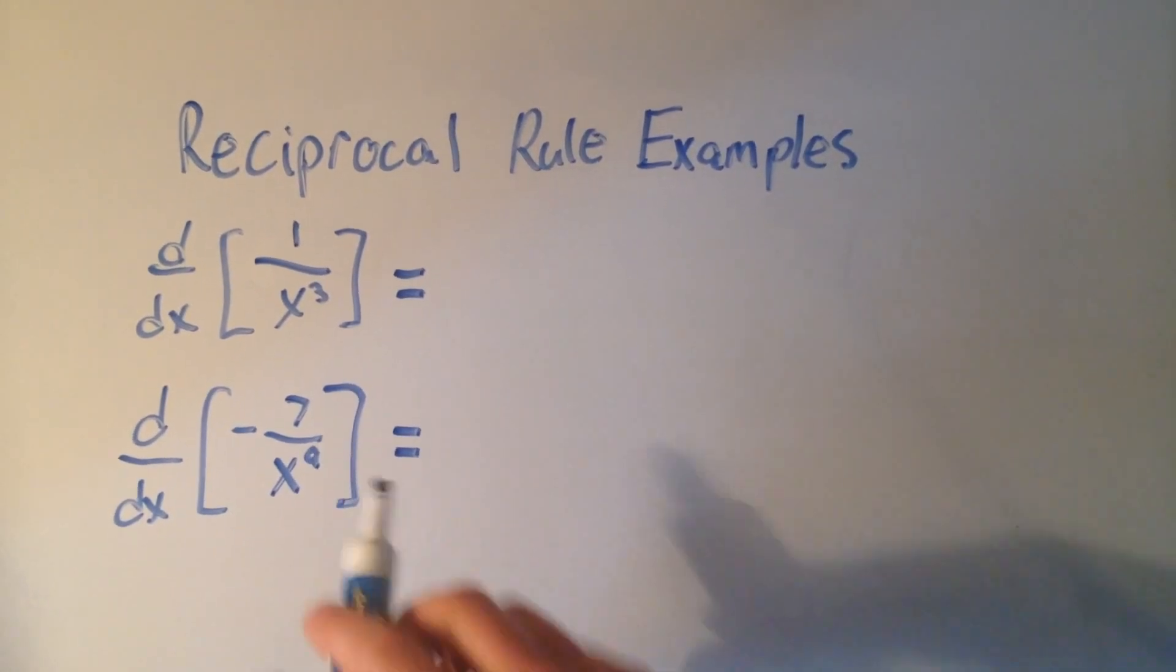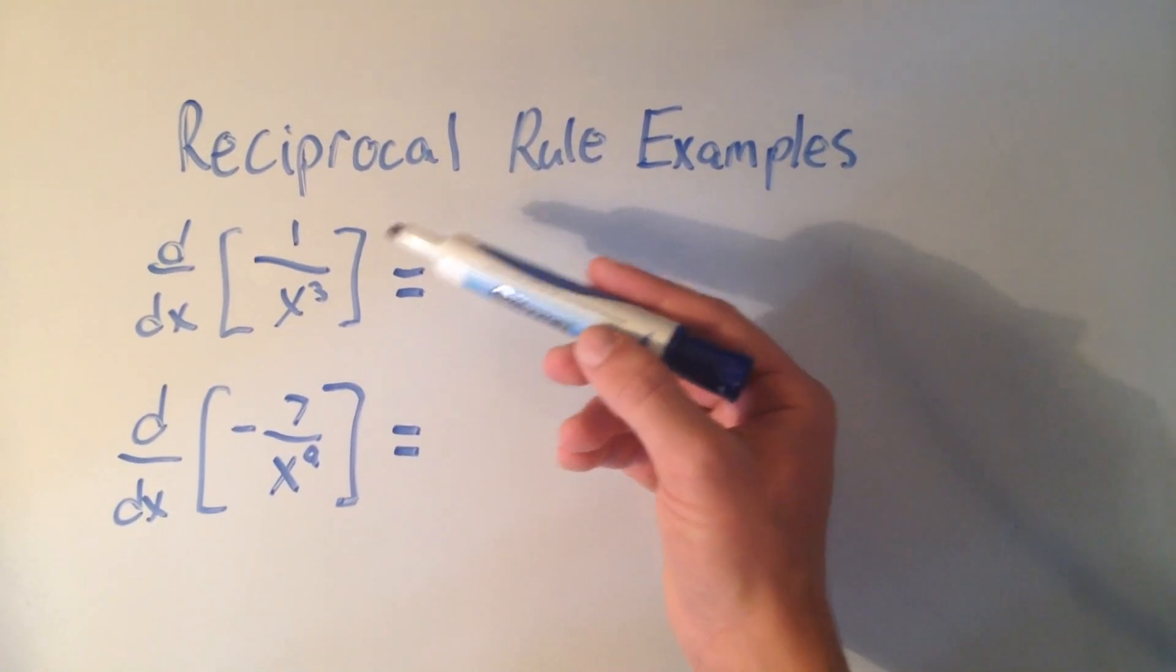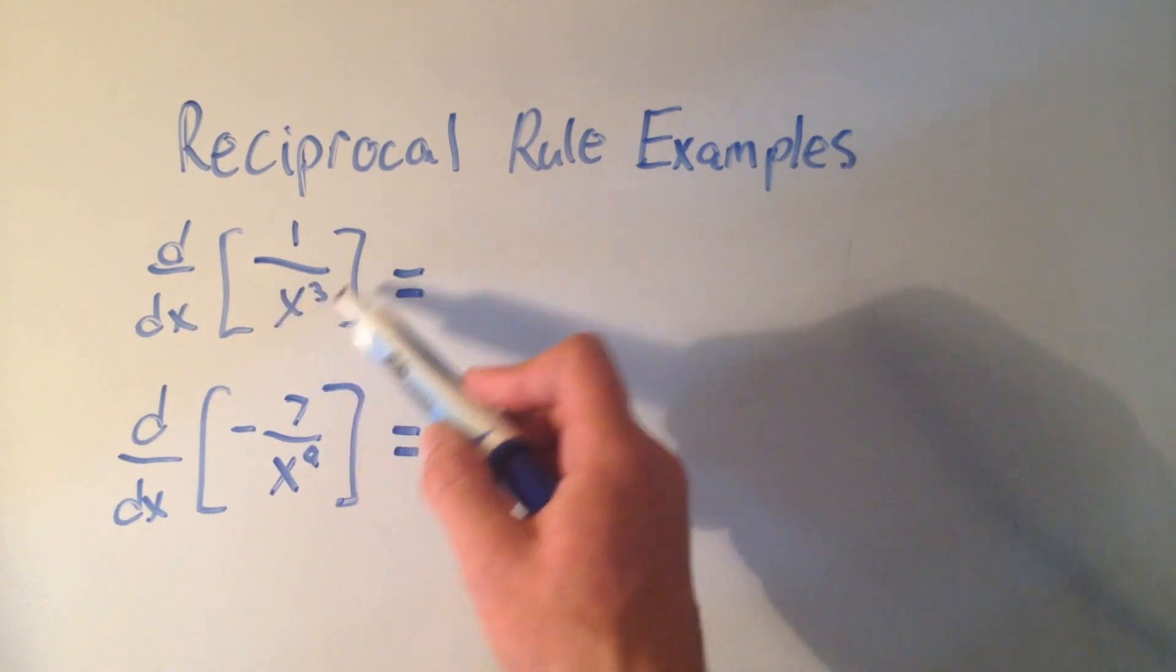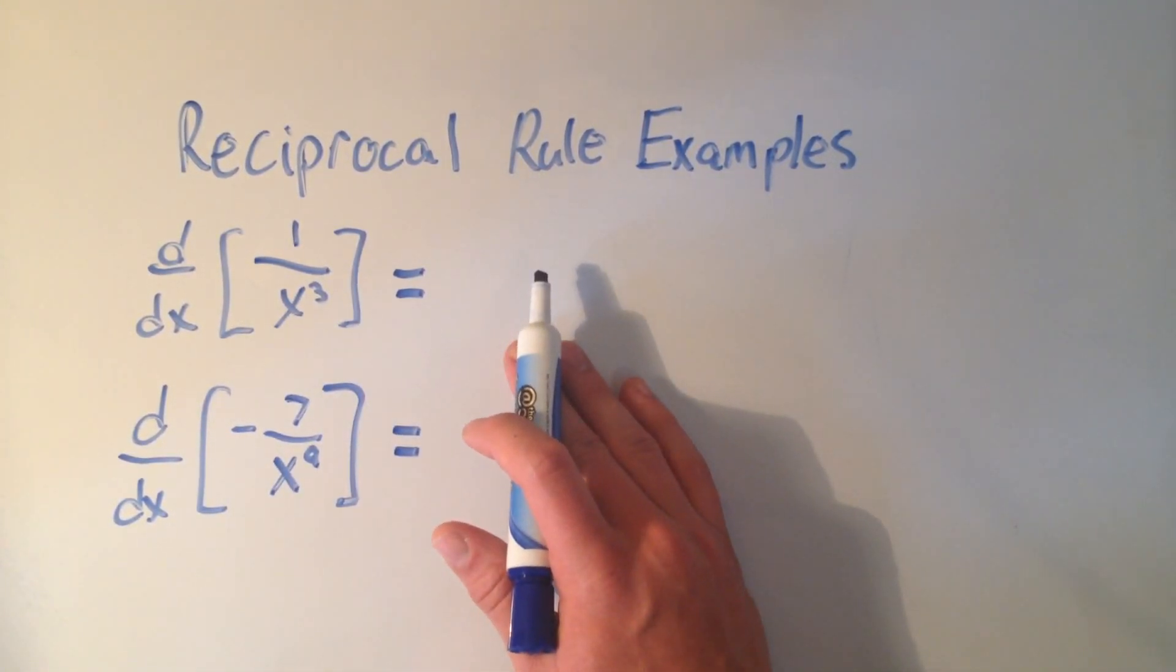So I'm going to do some examples with the reciprocal rule. And if you recall, the reciprocal rule says if I have 1 over something, then I take the derivative of that something and I put it on top, I rewrite the denominator squared, and I throw a minus sign out front.